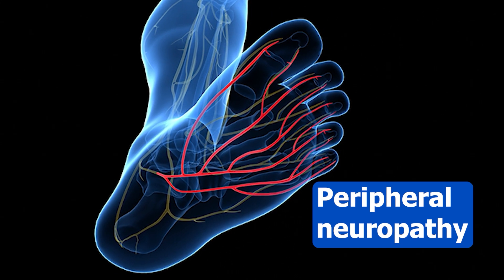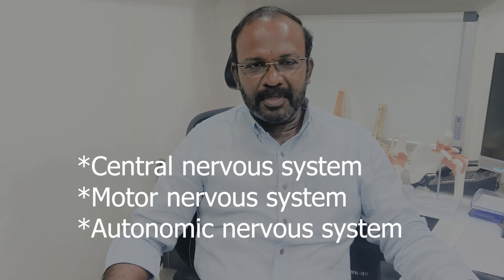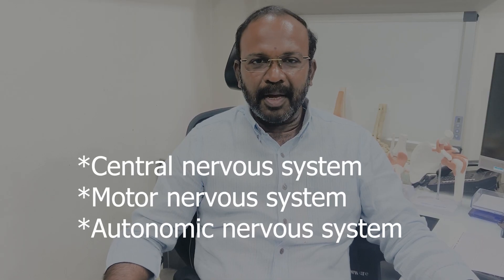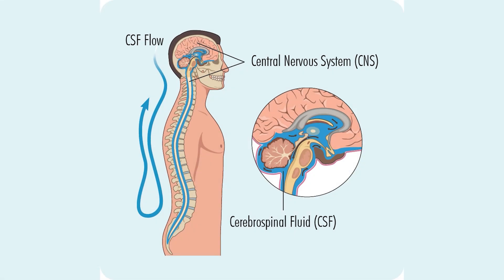The nervous system is divided into the sensory nervous system, motor nervous system, and autonomic nervous system. The sensory nervous system is a system that takes the impulses — the touch and feel sensations — from the hand and foot to the brain so that you can recognize them.